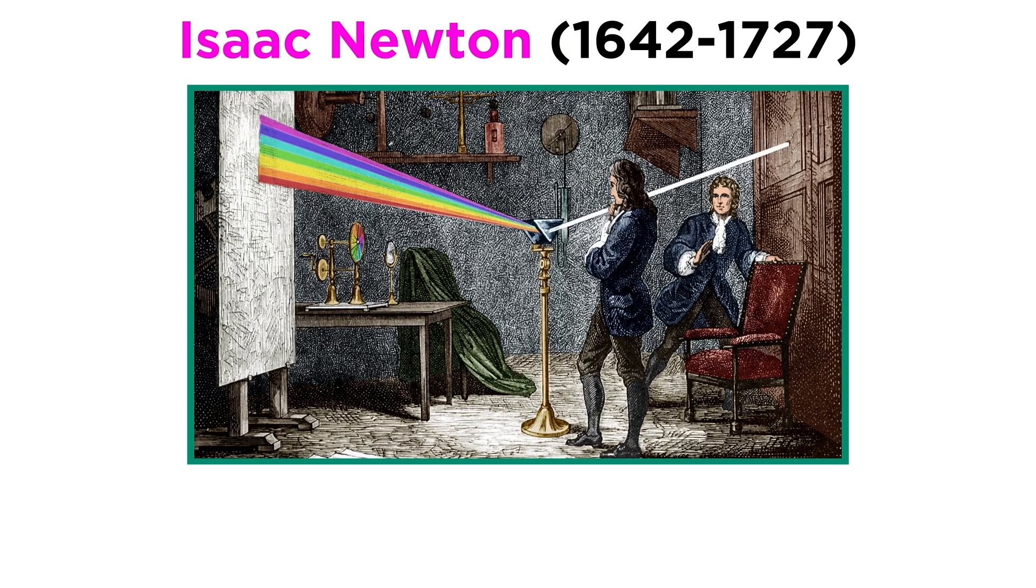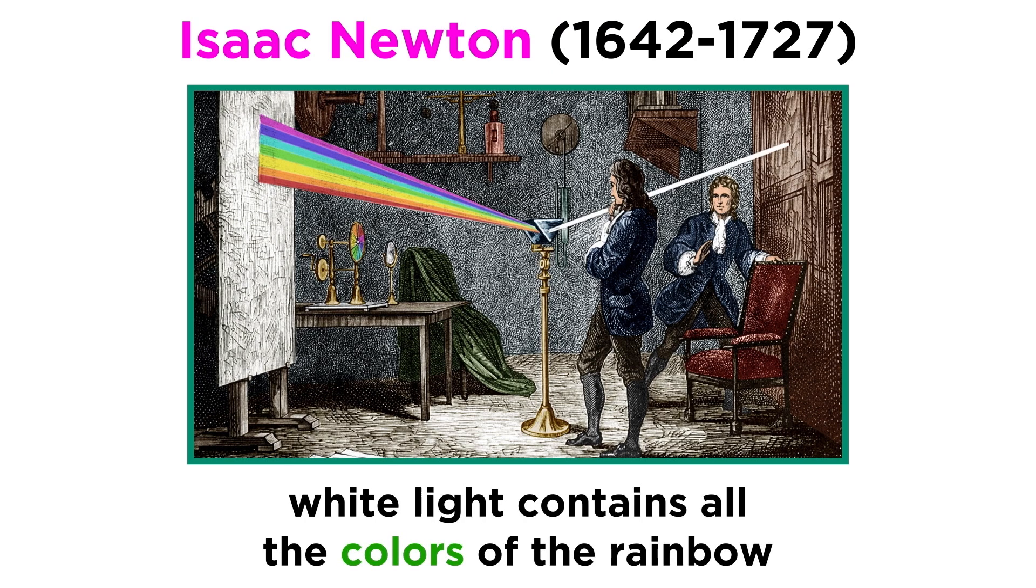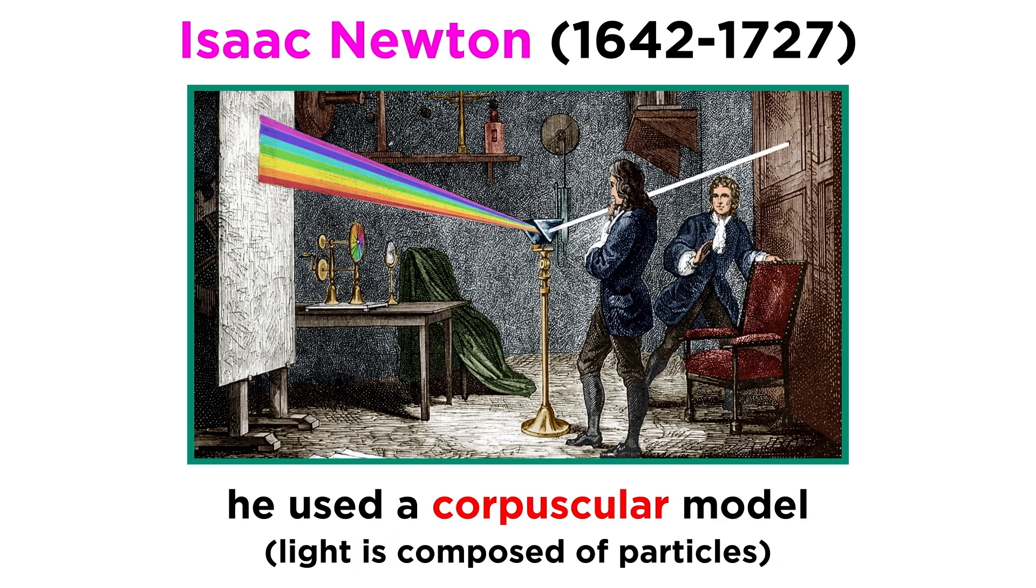In the 17th century, Isaac Newton worked with prisms to show that white light we see all around us actually consists of all the colors of the rainbow put together, and he described his findings in optics by evoking a corpuscular view of light, which implies that light is composed of tiny particles.